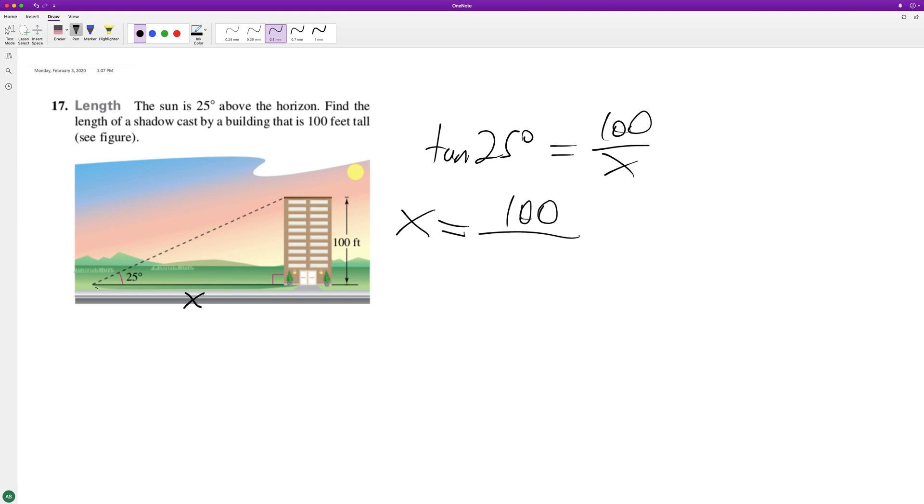So we end up with 100 divided by the tangent of 25 degrees. And what we end up with, depending on how far you want to round this out, what I got is to one decimal place,